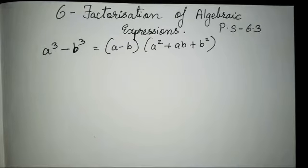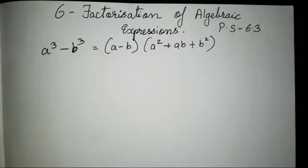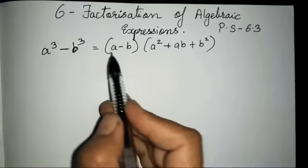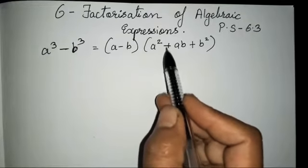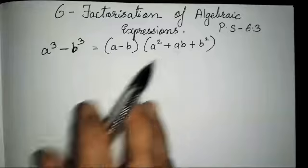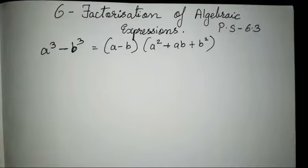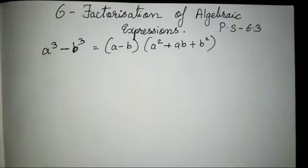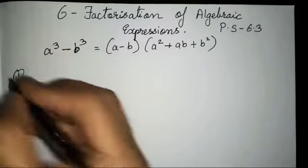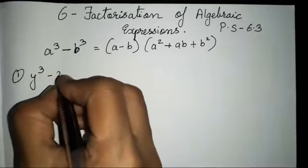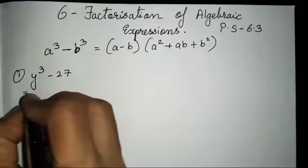Hello everyone, today we are going to study chapter number 6 — factorization of algebraic expressions, Practice Set 6.3. In today's video we are going to see the expansion of a cube minus b cube, which equals a minus b times a square plus ab plus b square. The same expression with a positive sign we have done in the previous video — the link will be provided in the description box. The steps are the same, only the signs are different.